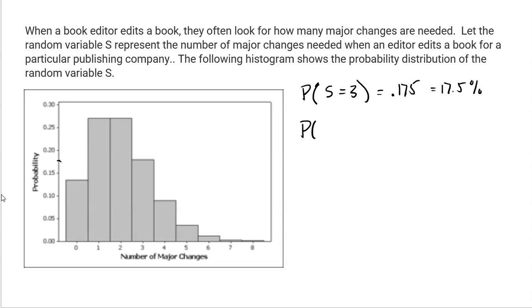What are some questions I could ask you here? What's the probability that a book needs S equaling three, three major changes? We go to three here, we just kind of have to cross over, and you could even do like 17 and a half percent if you wanted. That's one of the drawbacks of the histogram, you've got to do a little bit of guesstimating. What's the probability that a book needs less than three edits? It doesn't say equal to three, it says less than three, so it'd be zero, one, or two. We're just going to add those together. Zero looks to be about 14%, one and two both look to be maybe about 23%, so about 60 total percent.